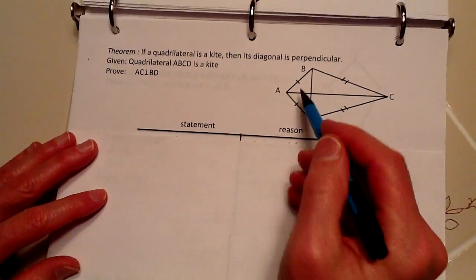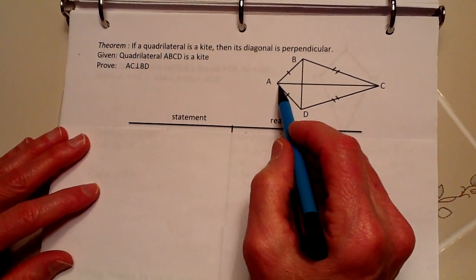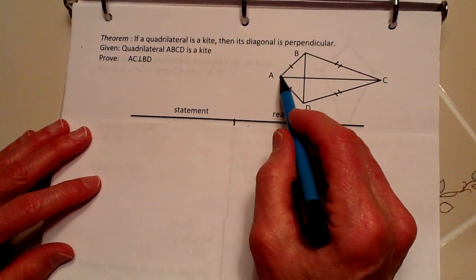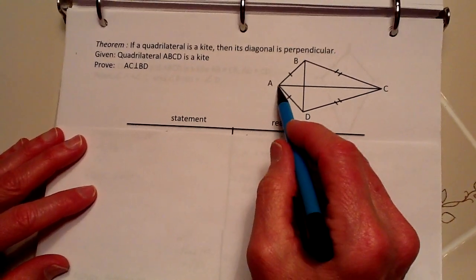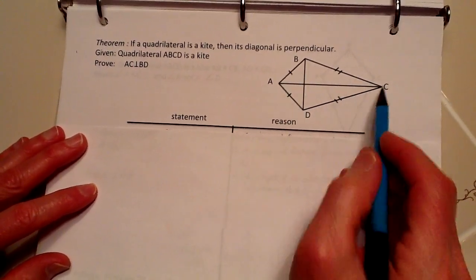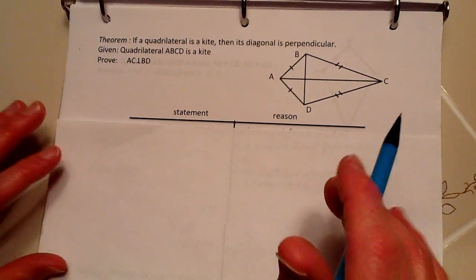What we have here, as you can see, is a kite ABCD. And as you notice, in a kite this side AB is congruent to AD, and likewise BC is congruent to DC. That is all part of making a kite.